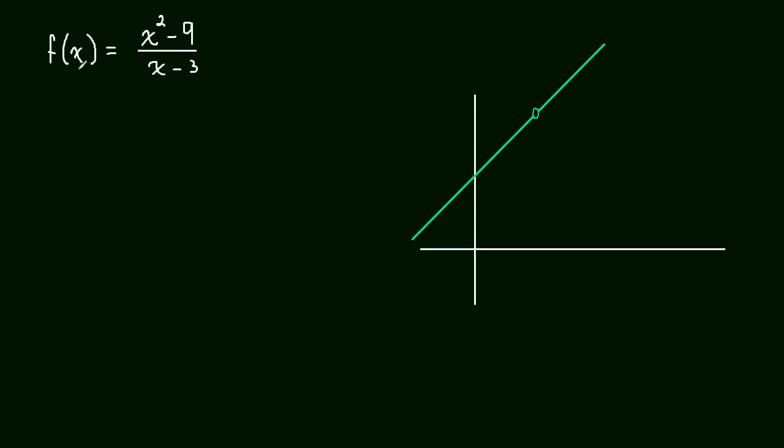Let's take a look at this function f of x equals x squared minus 9 over x minus 3. I have it graphed over here in green and you can notice that there's a hole in the graph right here and that happens when x is 3.